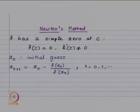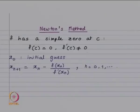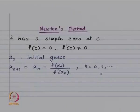Here is Newton's method: f has a simple zero at c, meaning f(c) = 0 and f'(c) ≠ 0. With x_0 as our initial guess, x_{n+1} = x_n − f(x_n)/f'(x_n), for n = 0, 1, 2, and so on. The interpretation is: look at the tangent to the curve at the point (x_n, f(x_n)), find where the tangent cuts the x-axis, and that intersection gives us the next iterate x_{n+1}.